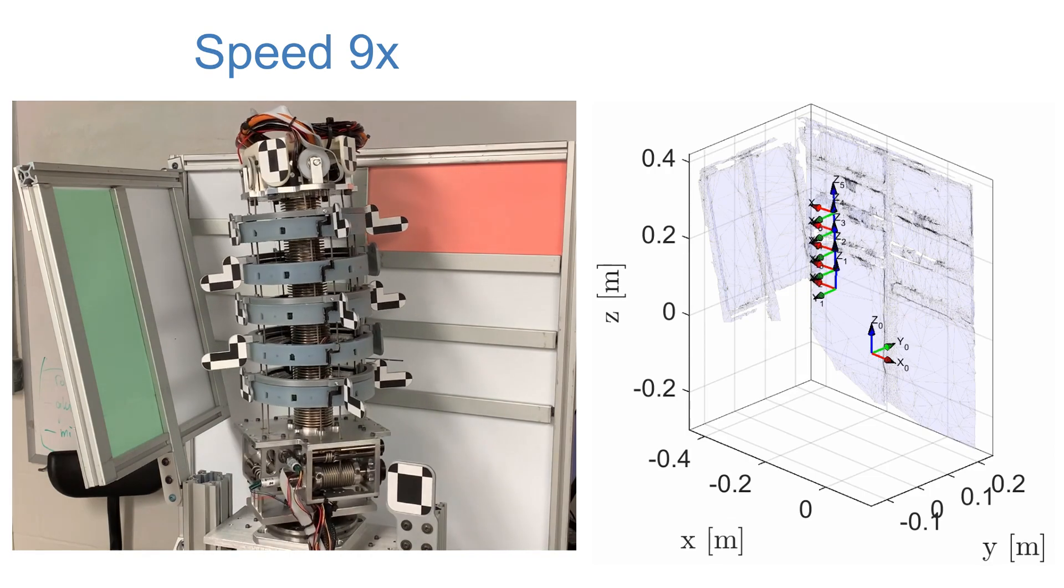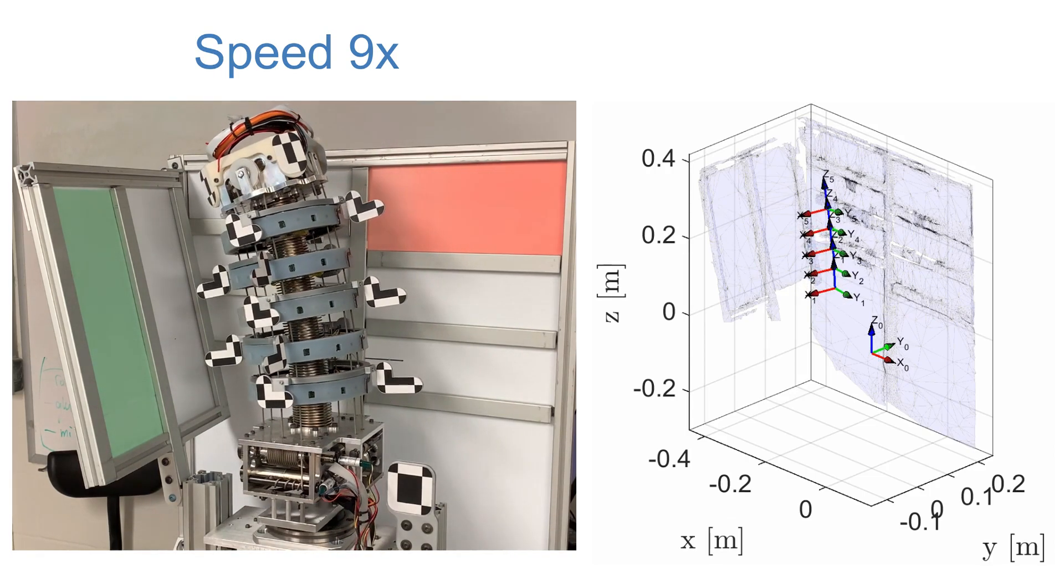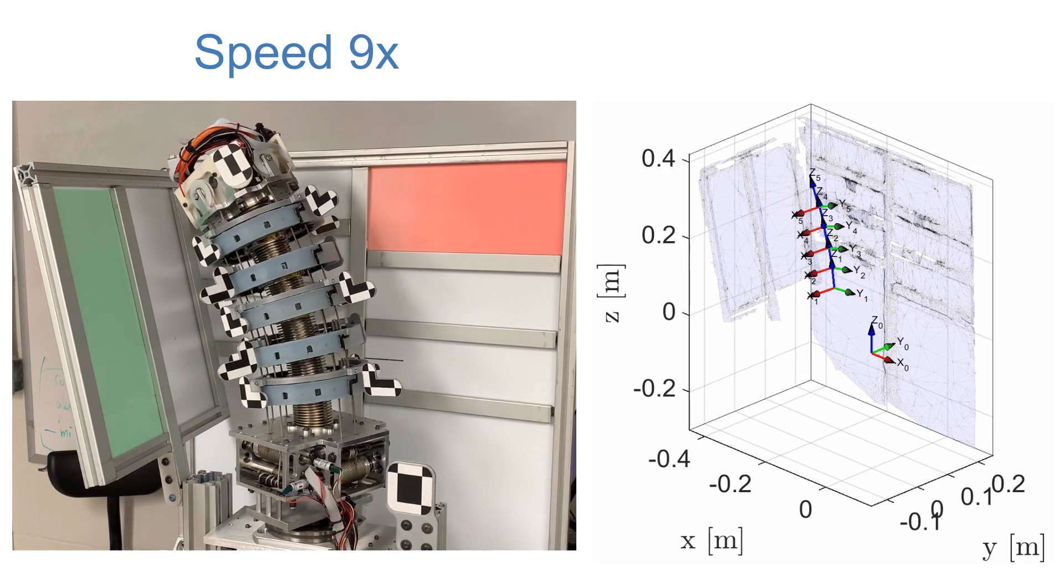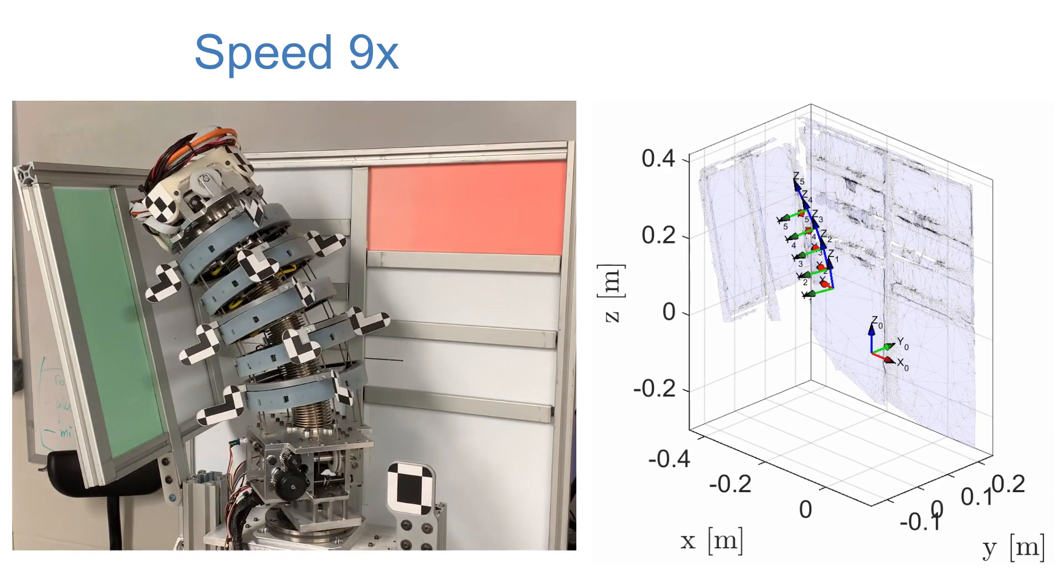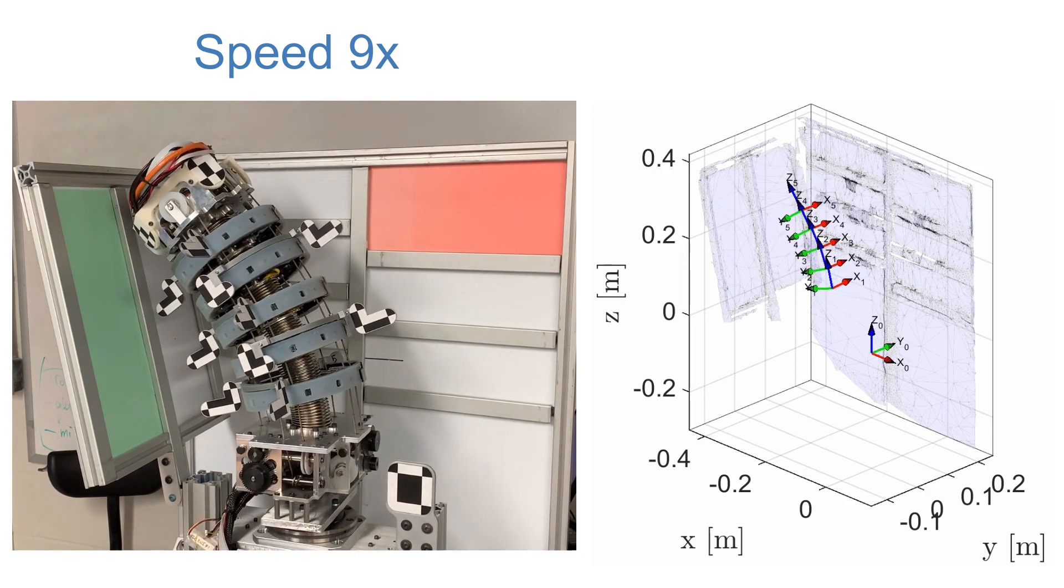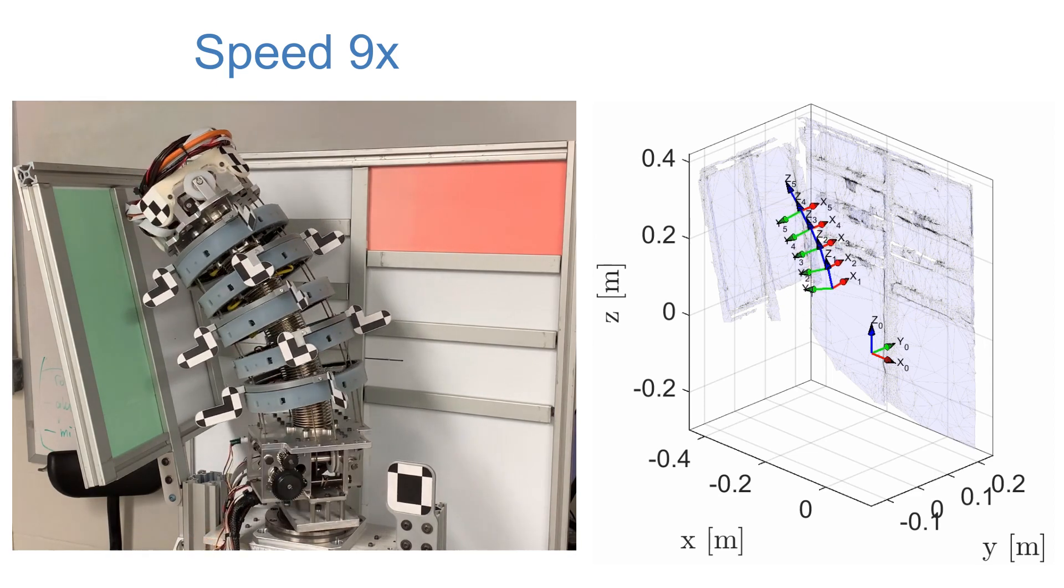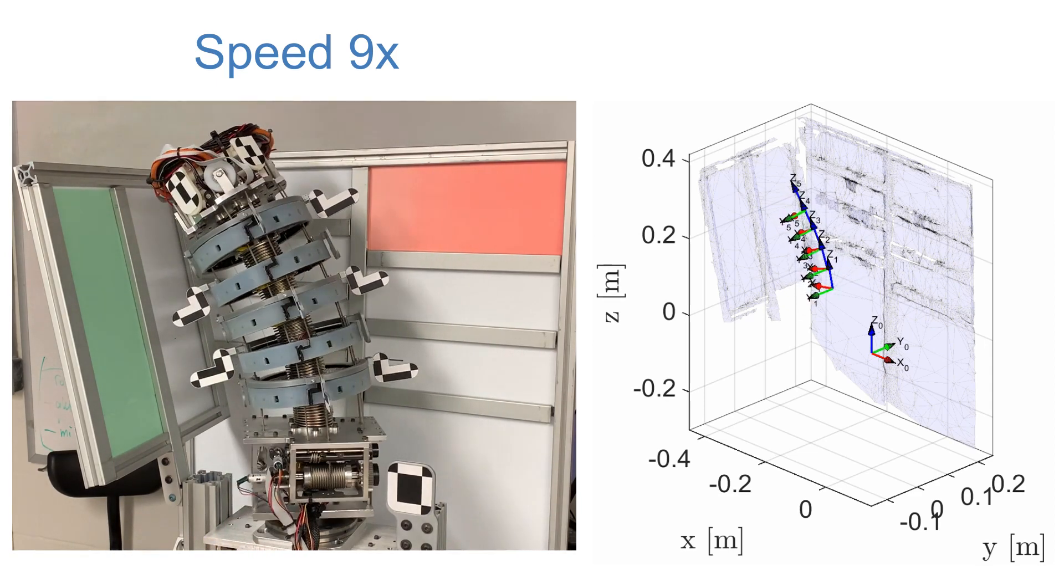A continuum robot with five integrated SDUs is used to map a mock-confined space. The robot is mounted onto a rotary stage and commanded to bend in different planes while rolling about its central backbone.